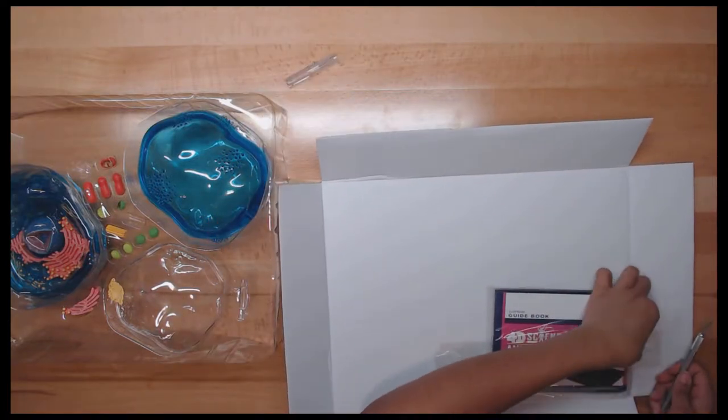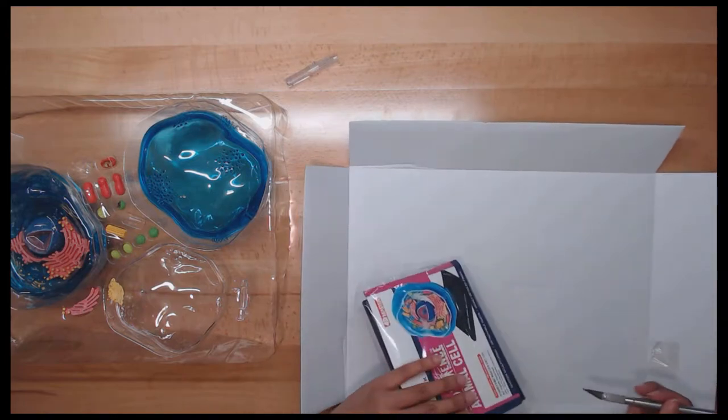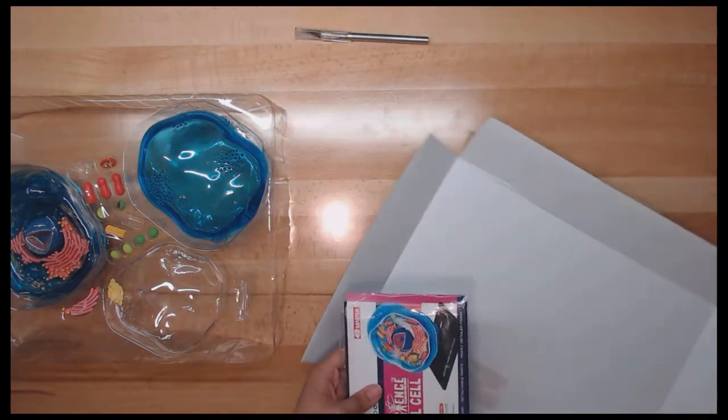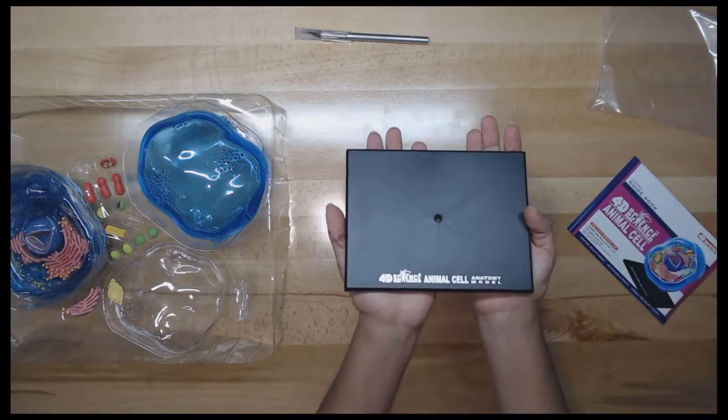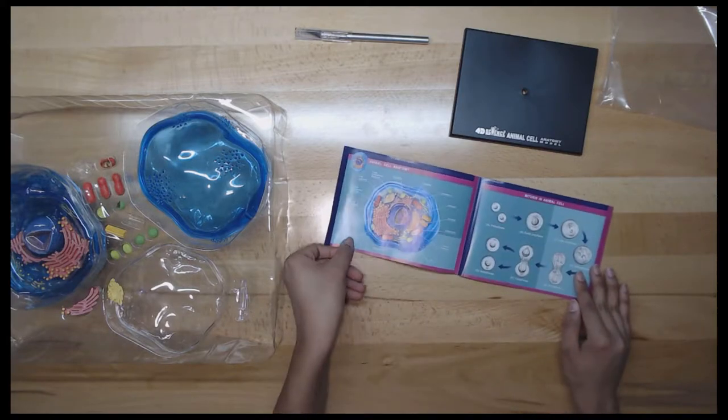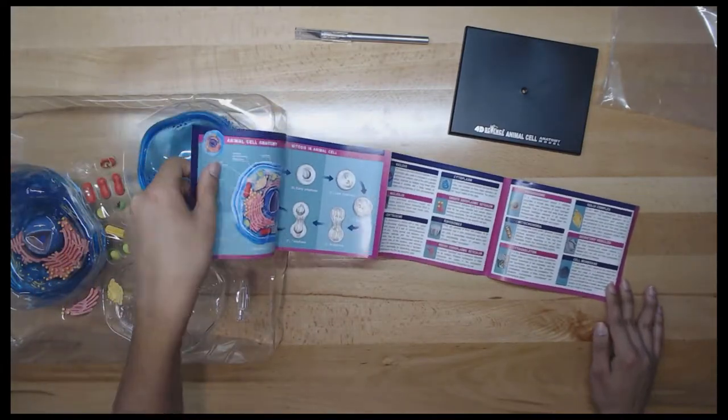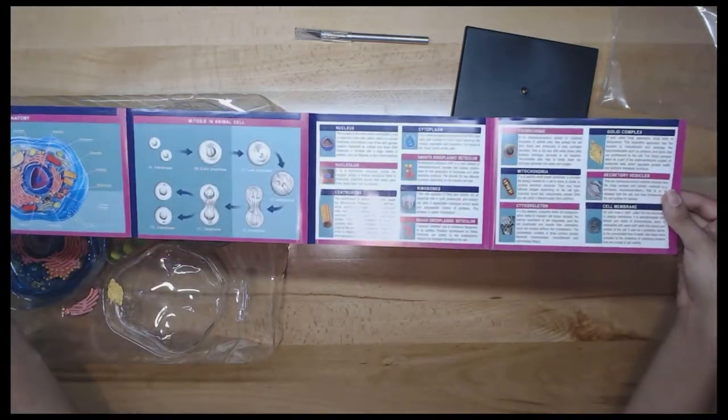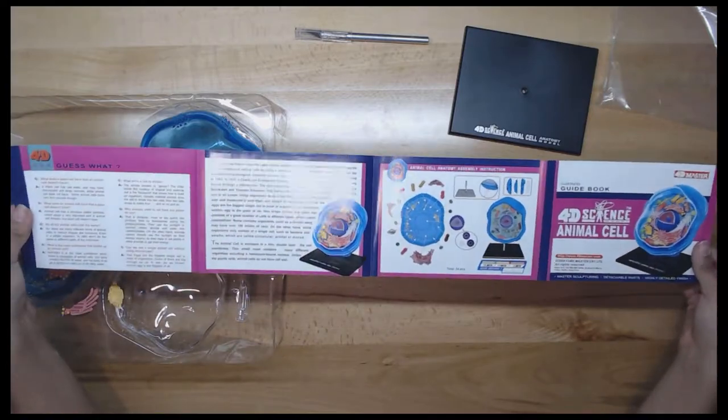One single animal and plant may consist of a greater number of cells in different types, which are called multicellular. Some complex organisms, such as a human adult, may have over 100 trillion cells. On the other hand, some organisms may only consist of a single cell, such as bacteria and amoeba, which are called unicellular protist or monad.